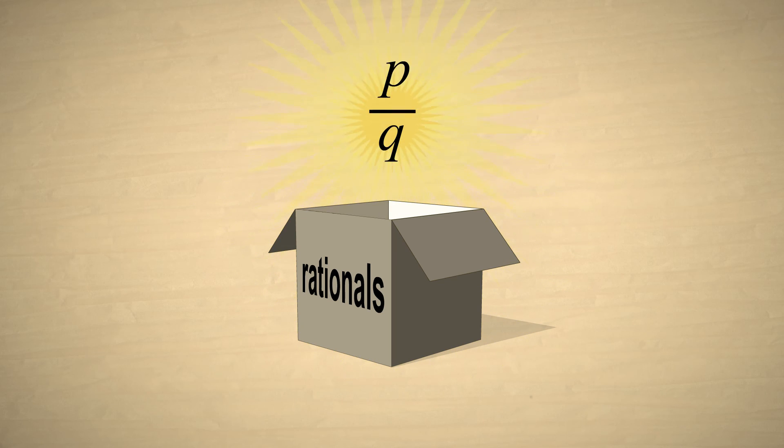Rational numbers are defined as any number whose value can be represented as a fraction p over q, where p and q are both integers. The value of the rational number is the quantity obtained by dividing p by q. We must add the caveat that q cannot be zero since dividing anything by zero is meaningless.